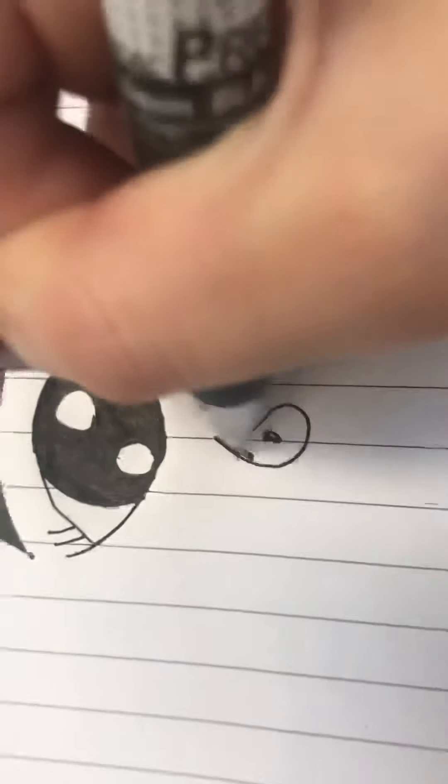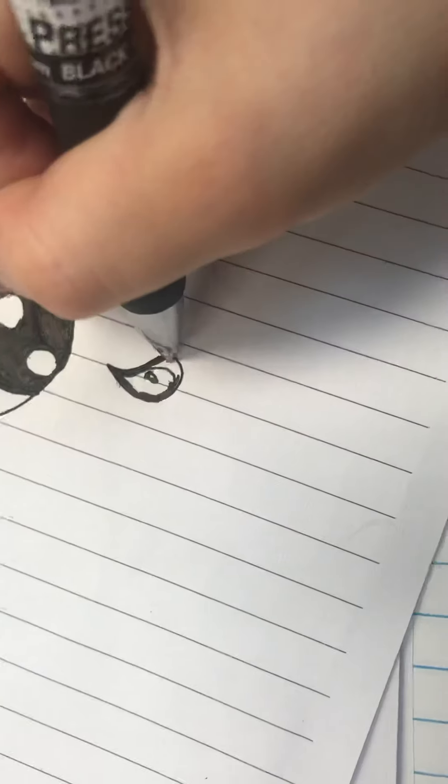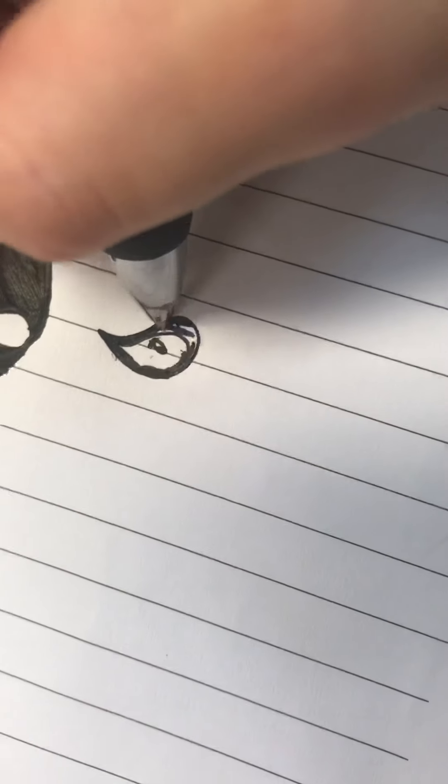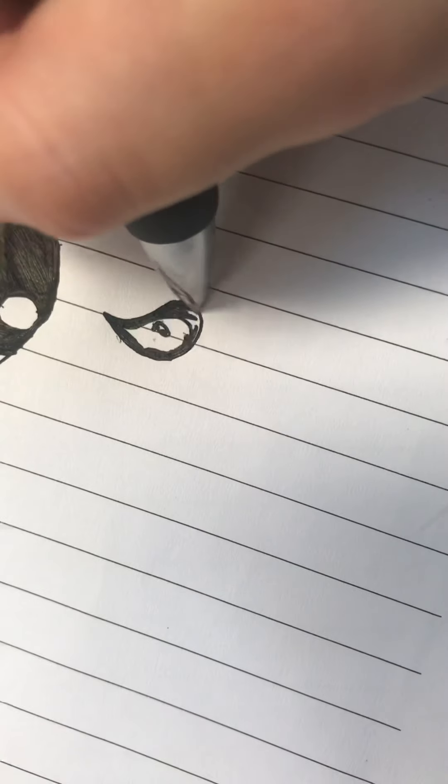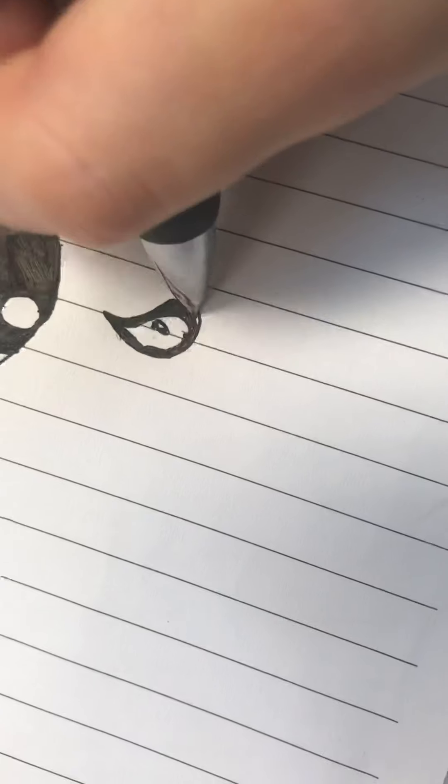So all we have to do is go ahead and do this, just put it in like we did everything else. Kind of just put a line around it and then color that in. Fill that in like we did the eyebrow.